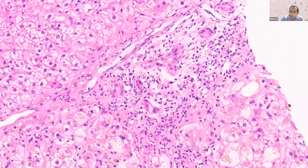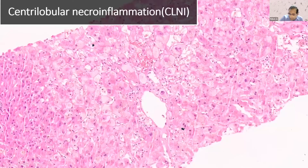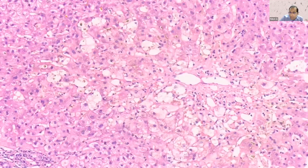Centrilobular lesions are very important — they are very important in graft failure. You will not see the typical venulitis described in TCMR in cases of chronic rejection. You will see cell loss and some inflammation — lymphocytes and a lot of macrophages which can also have a lot of degenerative pigment inside them. You can see ballooning of the hepatocytes and you can see congestion as well because of the centrilobular injury.